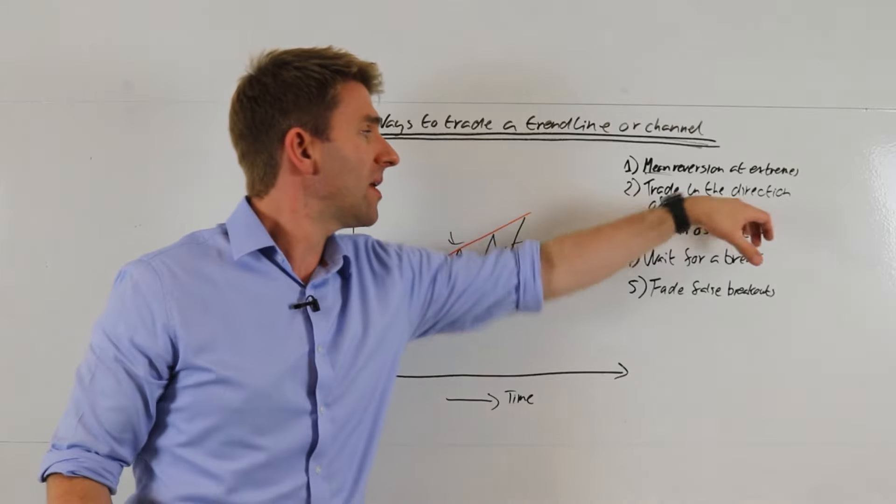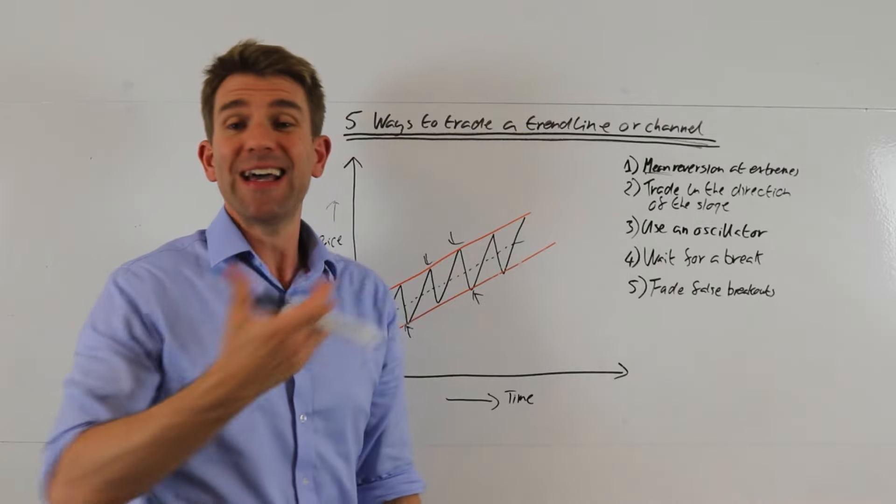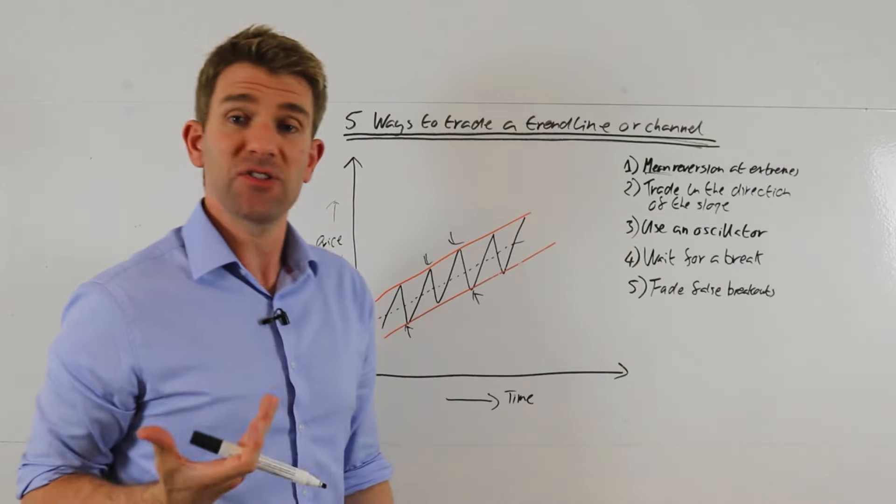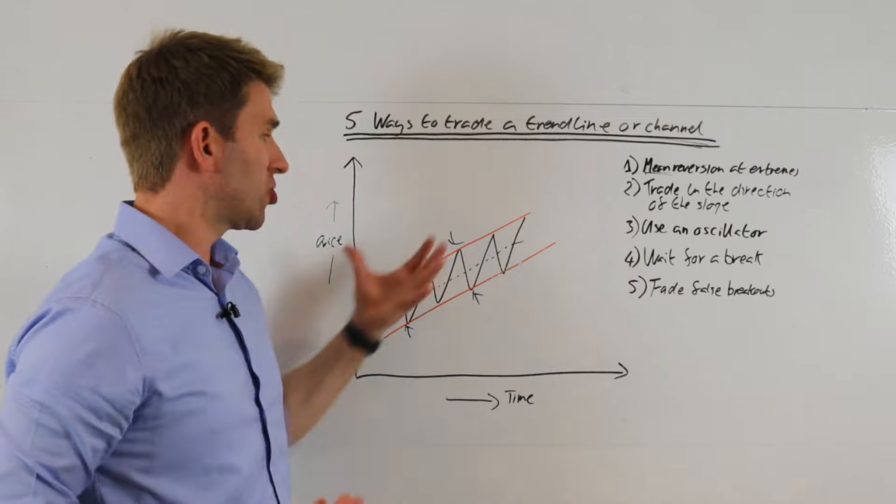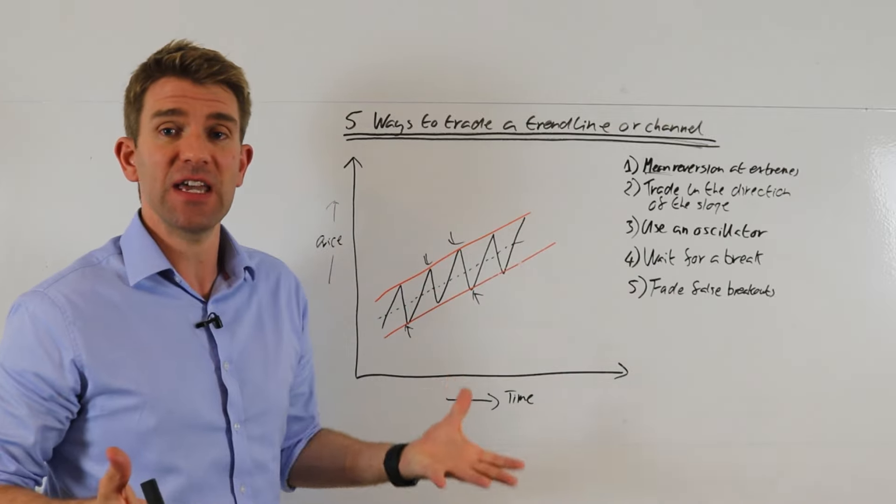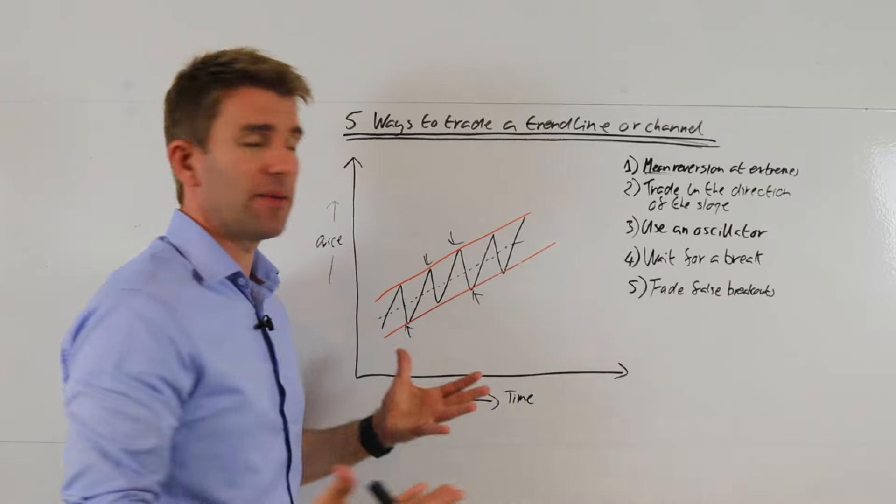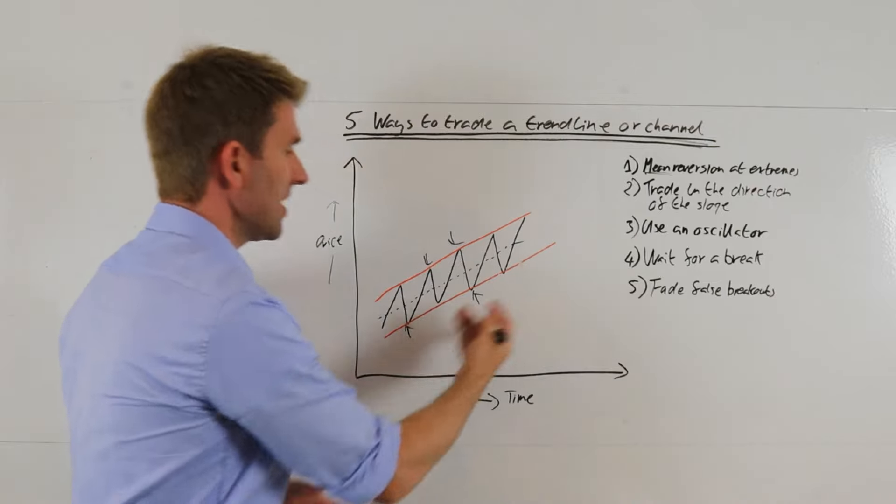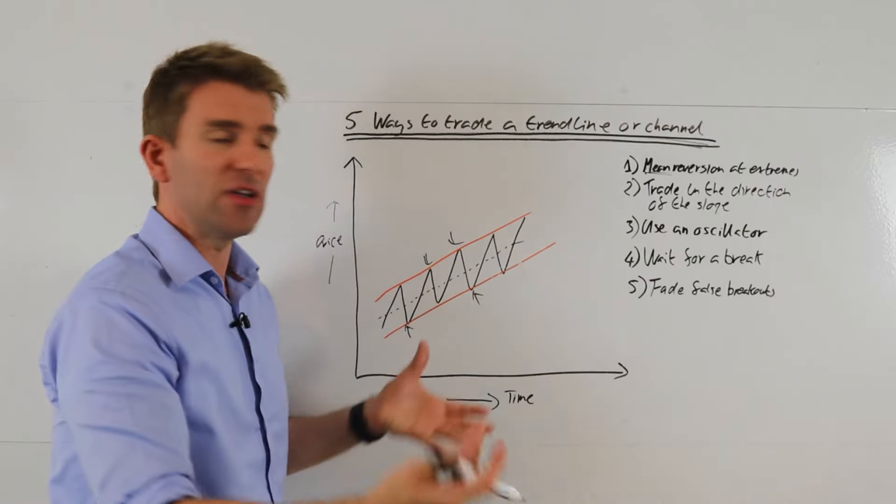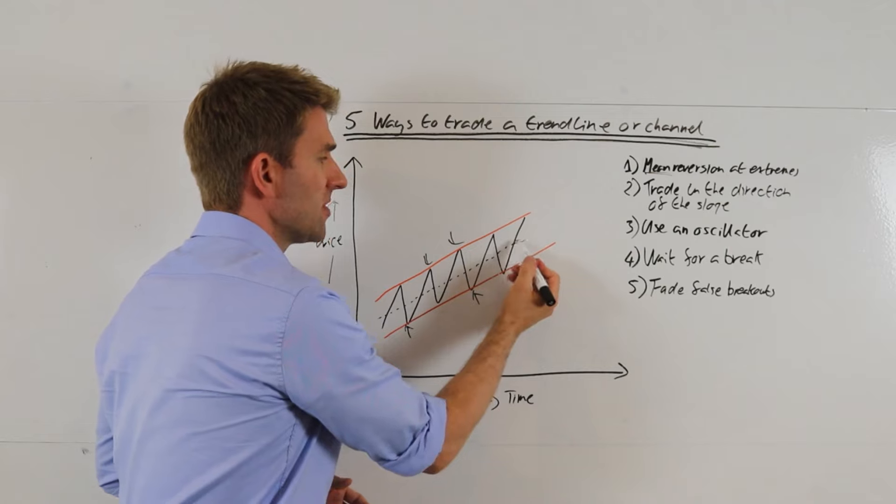So that's the first thing, mean reversion extremes, buying on the lower of the trend line, selling at the bottom of the trend line of the channel. Number two, trading the direction of the slope. So you can just use it as I alluded to at the beginning as a filter. So we're not looking to initiate a trade per se. Let's say this is on a higher time frame, right, on a higher time frame daily chart.